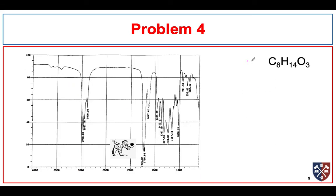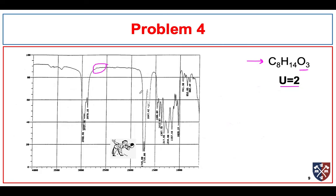Problem four — we are given the molecular formula. The first thing we should do is calculate the unsaturation number, which in this instance is two. We have three oxygens, so right away I'm looking in the region that would tell me if I have carbonyls. I see big absorptions at 1716 and 1745 cm⁻¹, so it's very possible that I have a ketone and an ester.